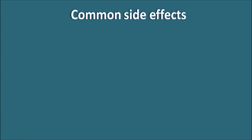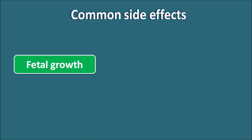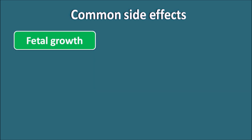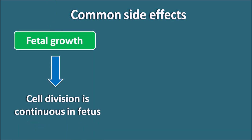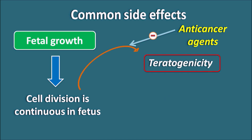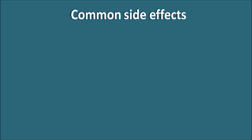Next is fetal growth. Within the fetus, we can observe continuous cell division. Anti-cancer agents can inhibit this cell division when drugs are given to a pregnant woman. So anti-cancer agents can produce teratogenicity, thereby producing some fetal damage. These agents should be carefully given to pregnant women as they carry a high risk of teratogenicity.